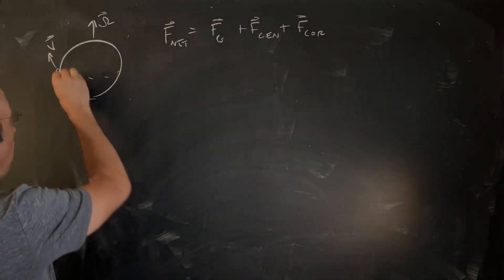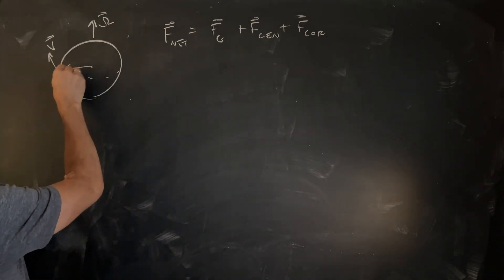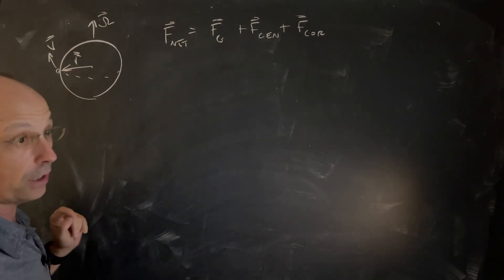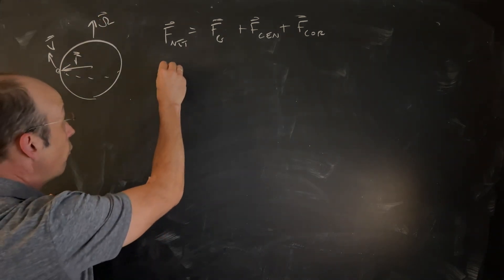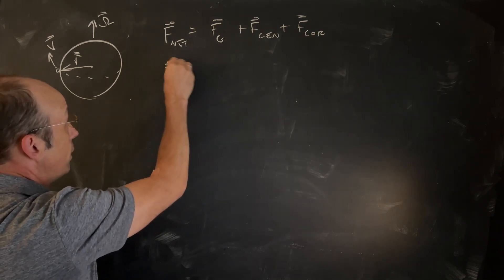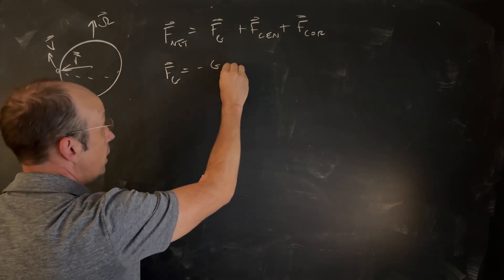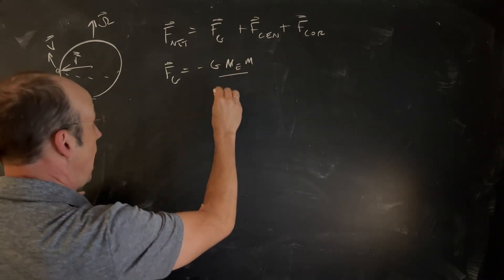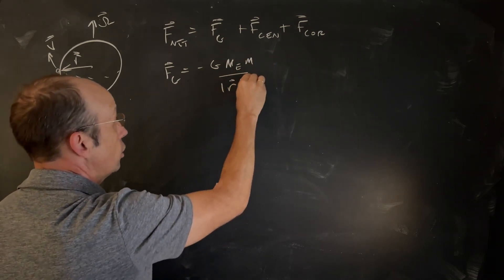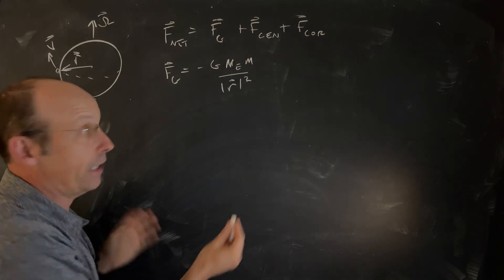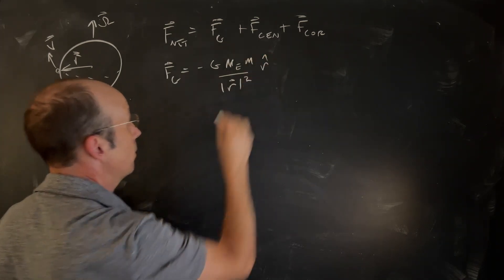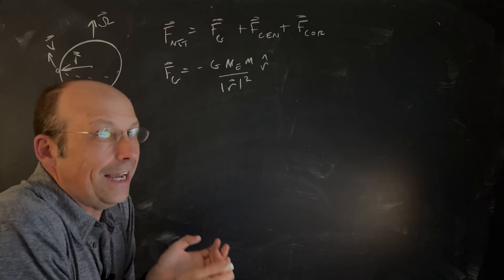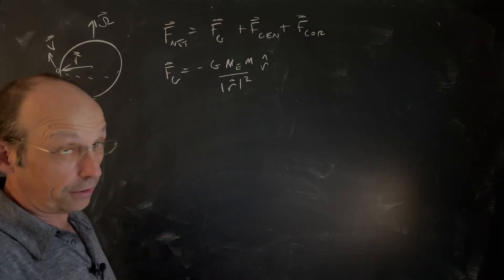Imagine I have a ball. I have some vector r, I have an angular velocity omega, and it has some velocity v. The gravitational force is our normal gravitational force: negative G, mass of Eros, mass m, divided by the magnitude of r squared. And I need to make that a vector, so r hat. That's my gravitational force, but we can't just use mg because it could move further away.